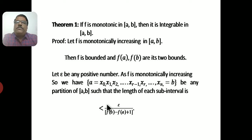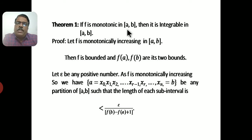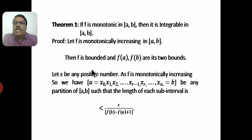Now we prove Theorem 1: If f is monotonic on the interval [a, b], then it is integrable on the closed interval [a, b]. That is, if f is monotonic on [a, b], then f is also integrable on [a, b]. We have to prove this.